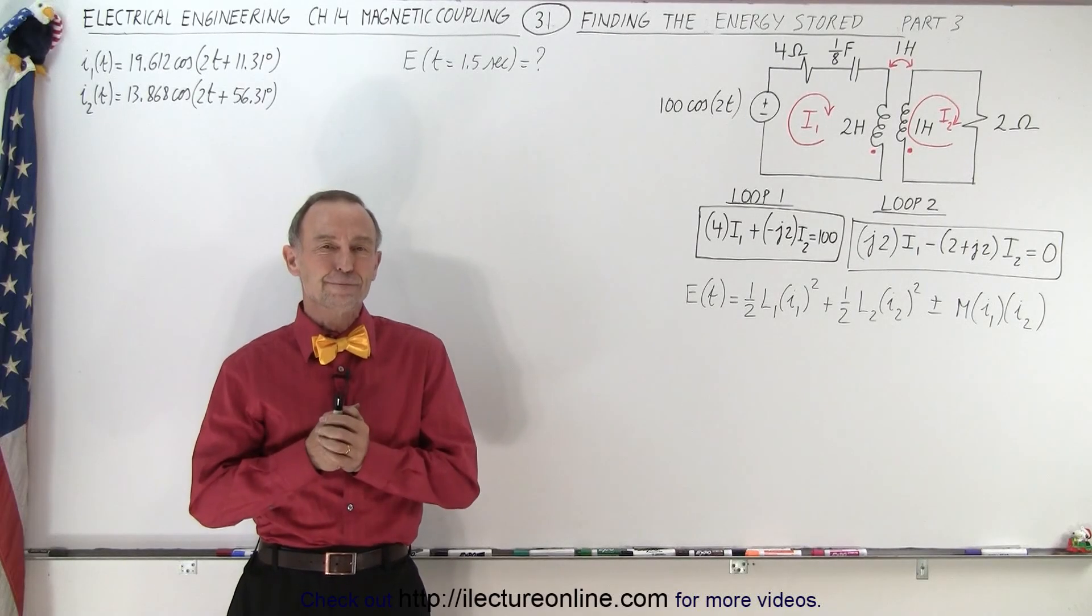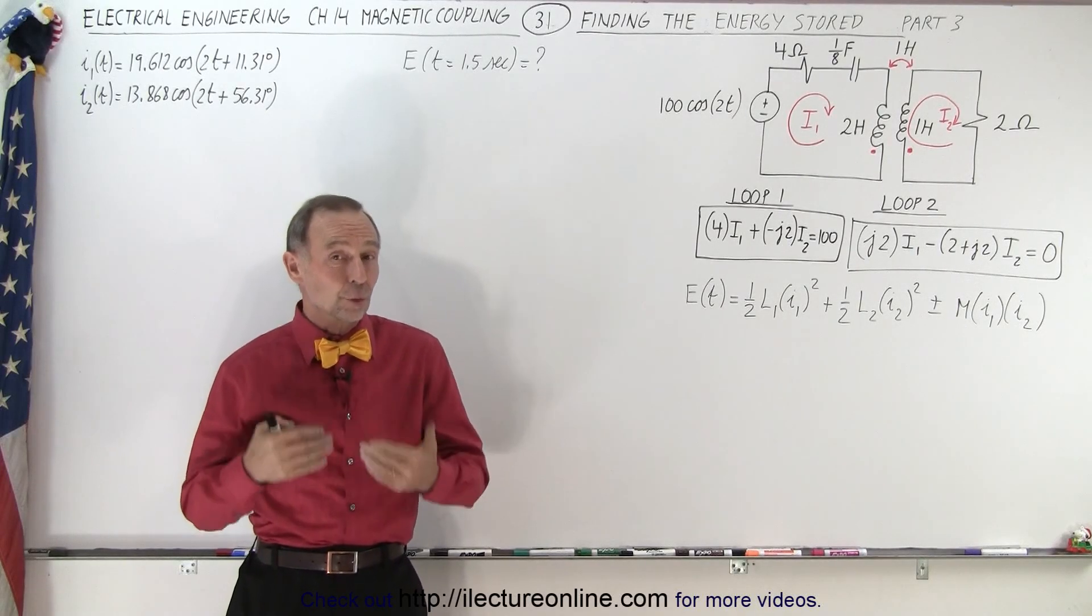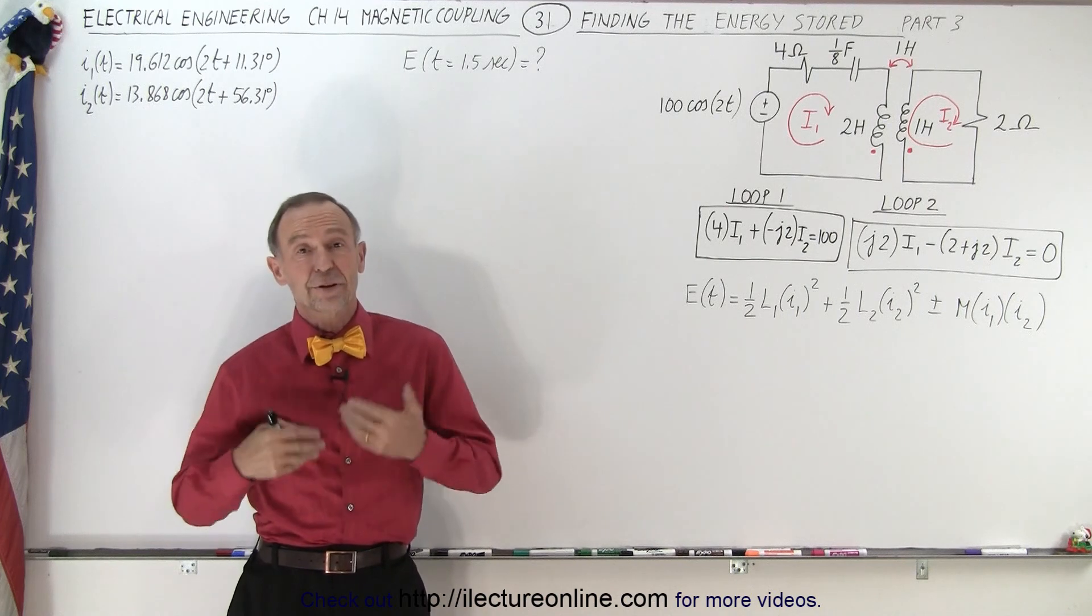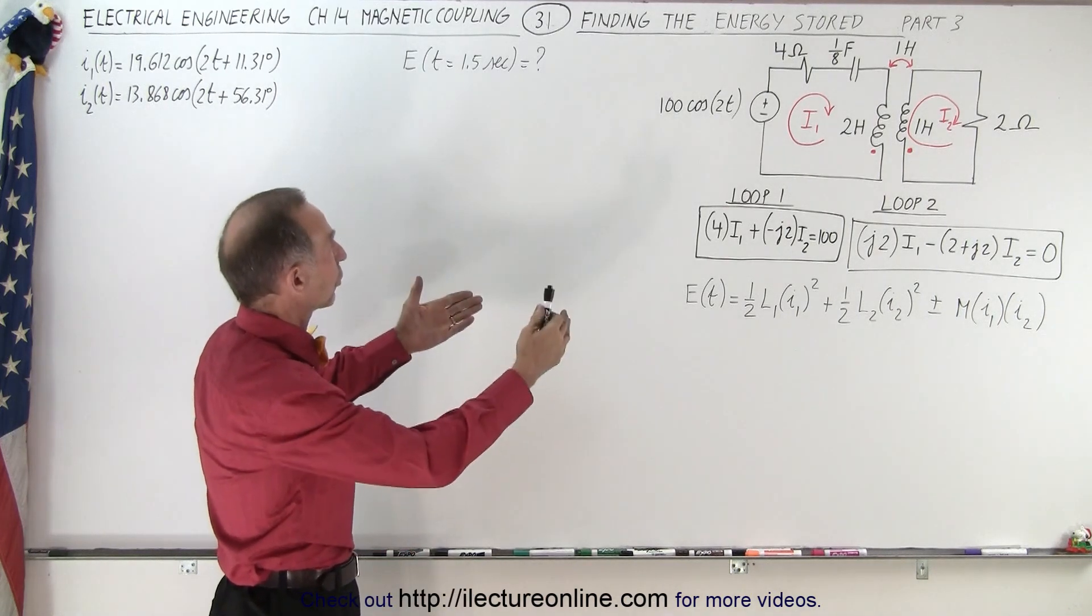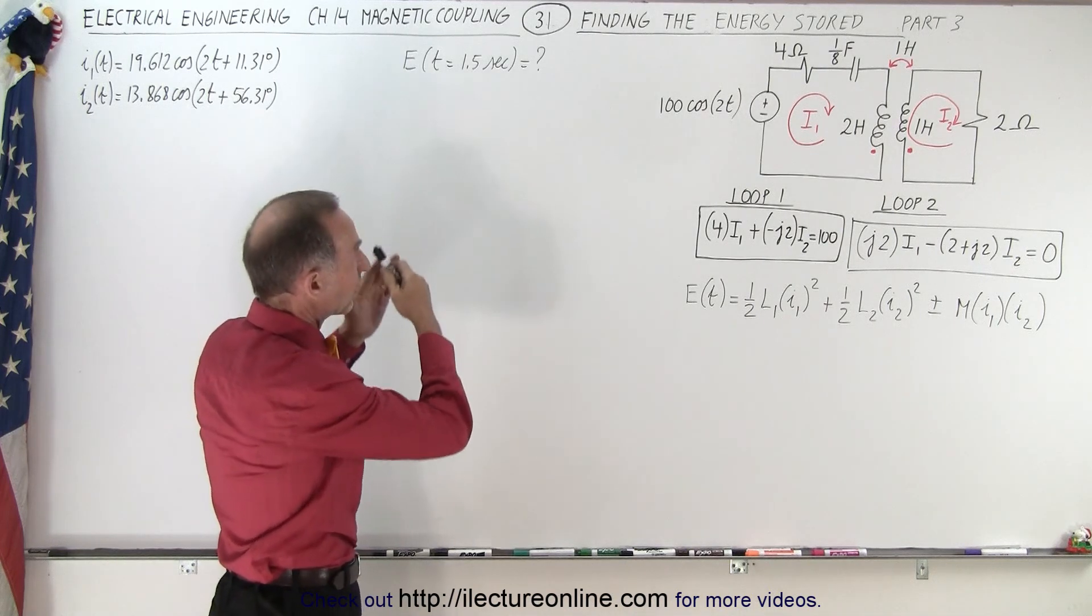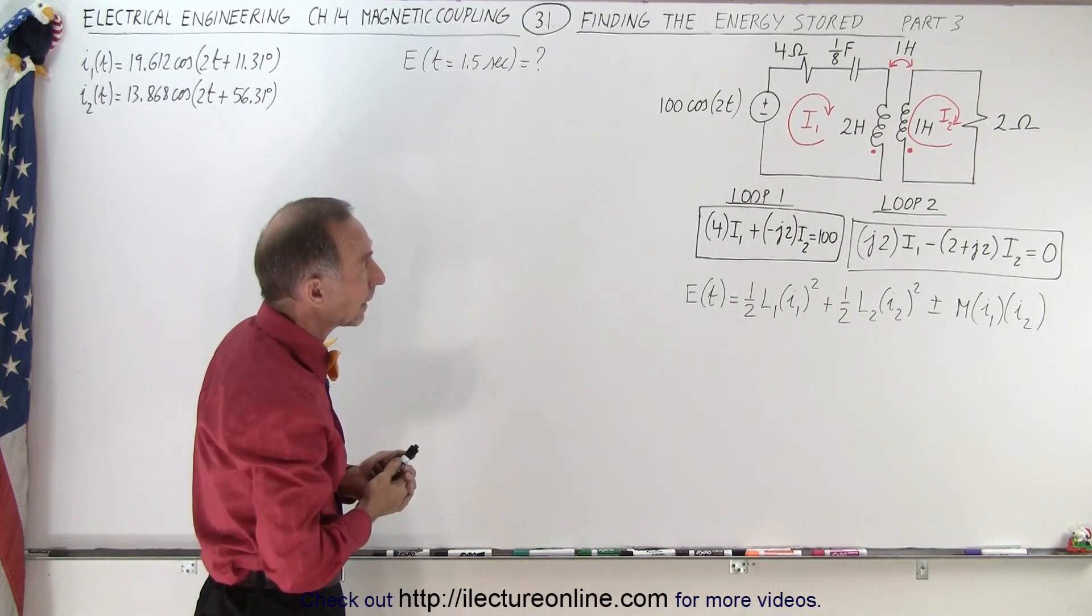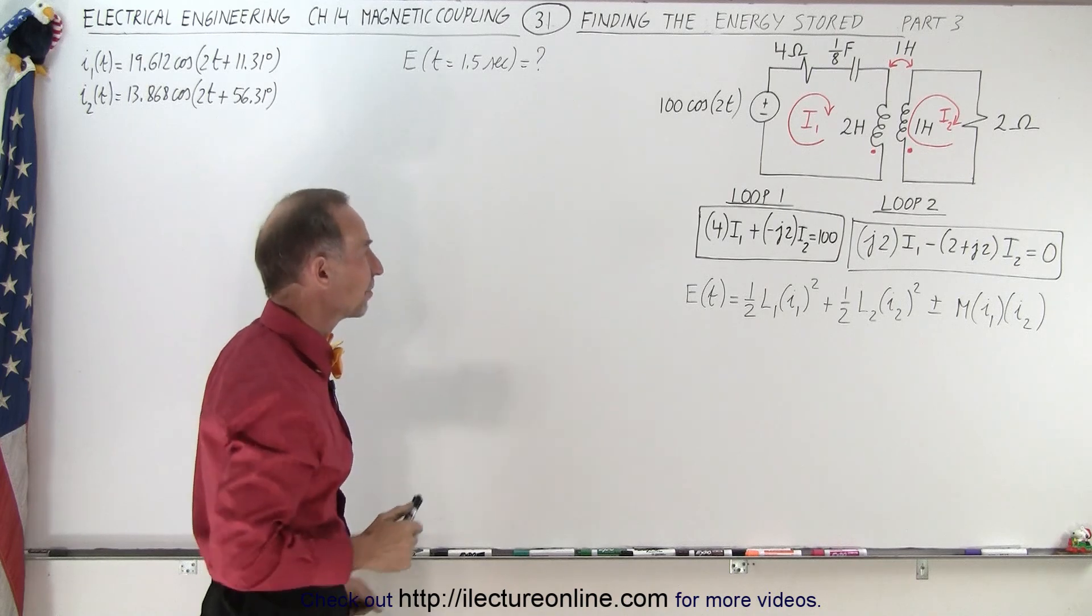Welcome to iLectureOnline. Now that we've found the two currents I1 and I2 as a function of time, we're now ready to find the energy stored in the two circuits with the magnetic mutual coupling at time equals 1.5 seconds.